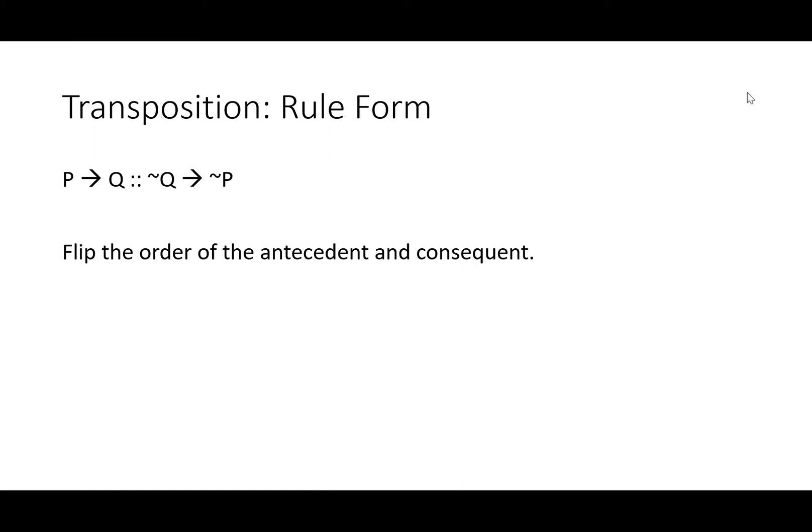To use this rule, flip the order of the antecedent and consequent, and then add or subtract exactly one negation to both sides. We can use simple inputs, A and B, to see how this works. If A then B is logically equivalent to if not B, then not A.